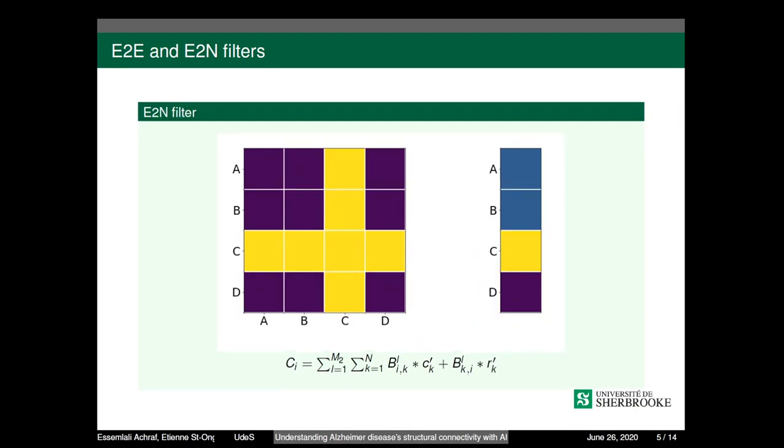Meanwhile, the edge-to-node filter reduces the dimensionality of data and plays the same role as pooling in classical CNN. The main difference between our version and the original BrainNetCNN is we omitted the application of node-to-graph and we adapted the edge-to-node filter to be applied just over the rows instead of the rows and the columns.